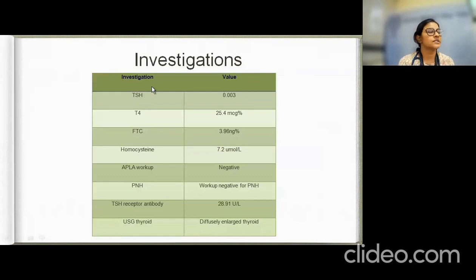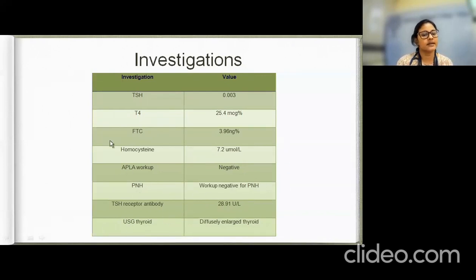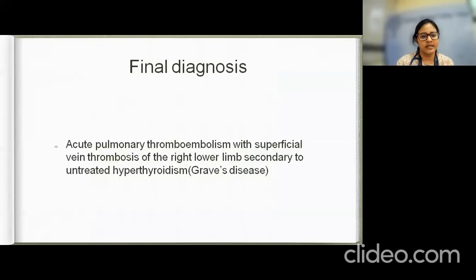This pointed toward a pro-thrombotic state. Workup included APLA which was negative, homocysteine of 7.2 micromol/L (normal), TSH of 0.003, T4 of 25.4, FT3 of 3.96, with TSH receptor antibody positive. Ultrasound thyroid showed a diffusely enlarged thyroid consistent with hyperthyroidism. PNH workup was negative. A full pro-thrombotic workup was deferred given the acute thrombus, planned for six months later after anticoagulation is stopped.